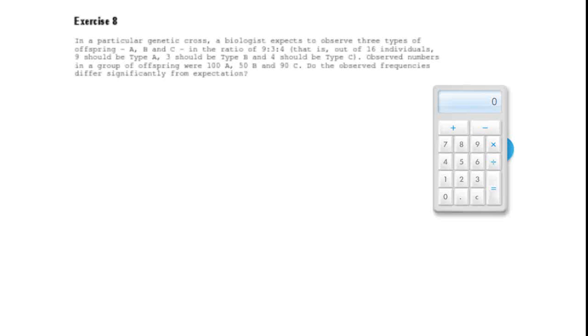In exercise 8, the idea is that three types of offspring should occur in the ratio 9 to 3 to 4. 9 out of 16 should be type A, 3 out of 16 type B, and 4 out of 16, or a quarter, type C.